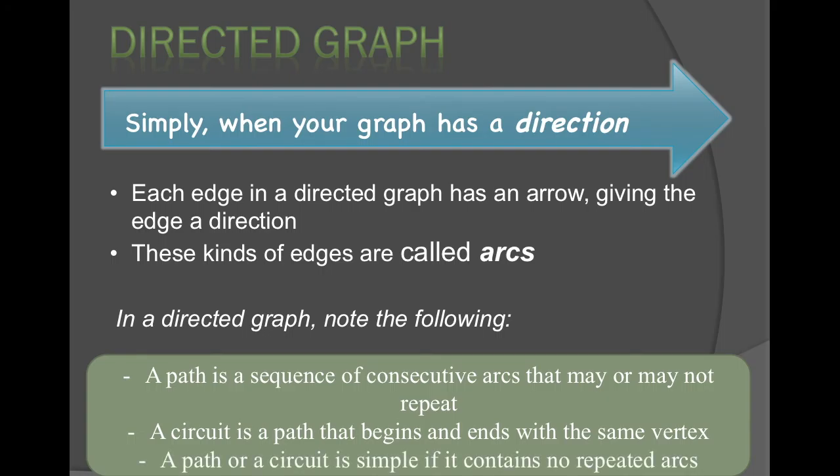And finally, a path or circuit is simple if it contains no repeated arcs. We're calling them arcs in this case because a directed graph has edges with arrows and we call those arcs.